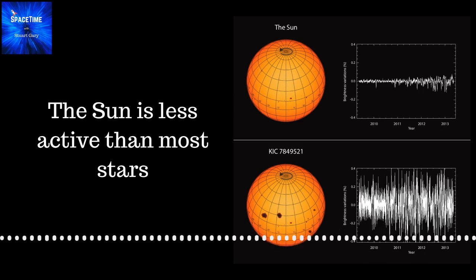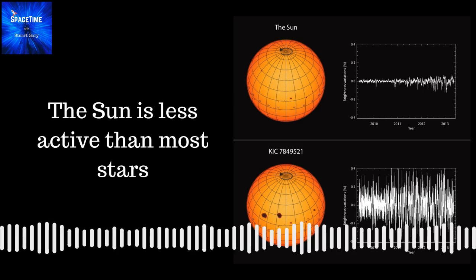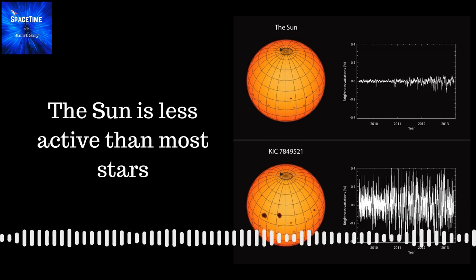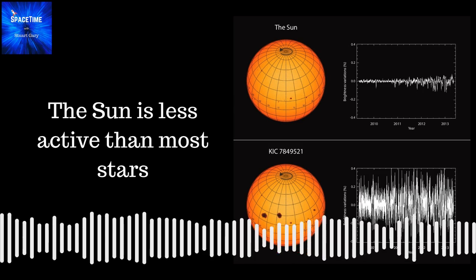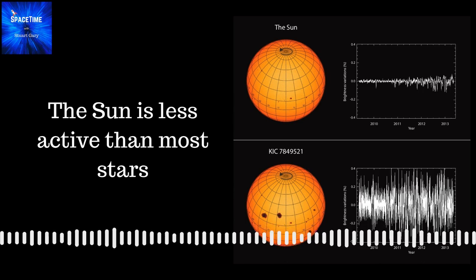It also gives us the interesting flip side, that it's easier to find planets around more stable stars. There's less activity to mess up your planetary signals. And so any alien civilizations trying to find planets around other stars, our sun would be one of the easiest targets.